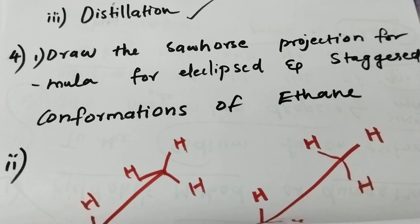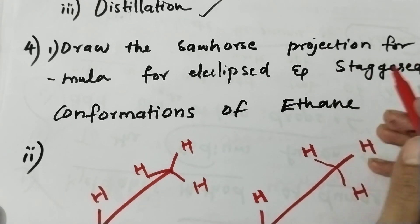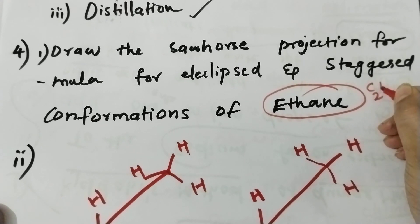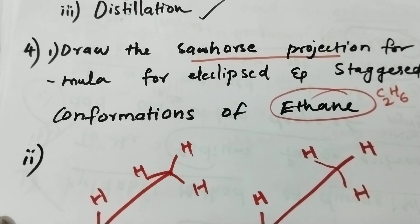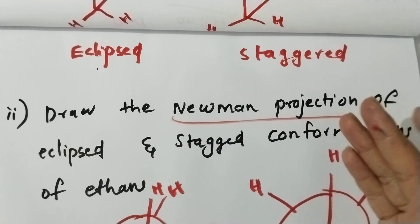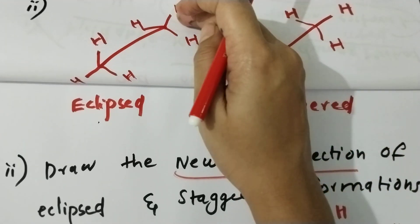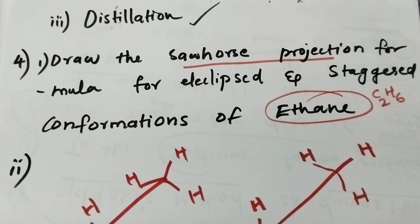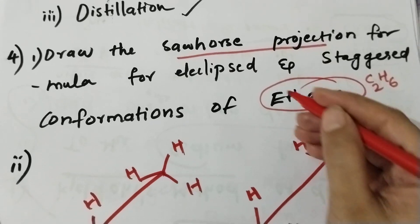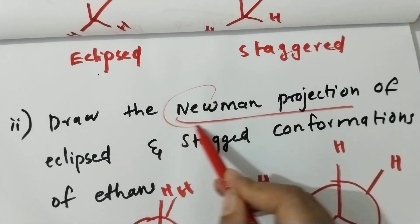The most repeated example is: draw the Sawhorse projection formula for eclipsed and staggered conformation of ethane (C2H6). Sawhorse projection will show the eclipsed conformation. The second projection is the Newman projection, which also shows eclipsed and staggered conformations. These are two sides of the same topic.